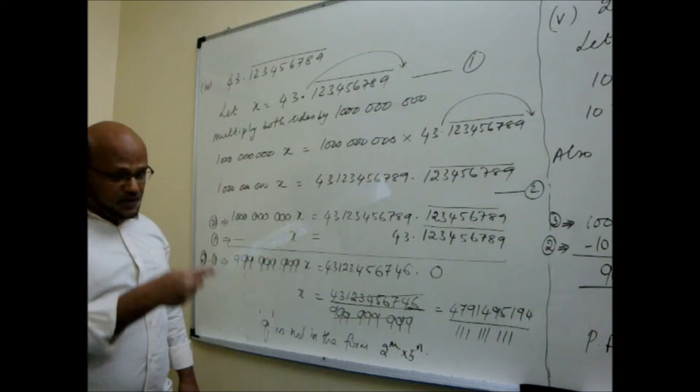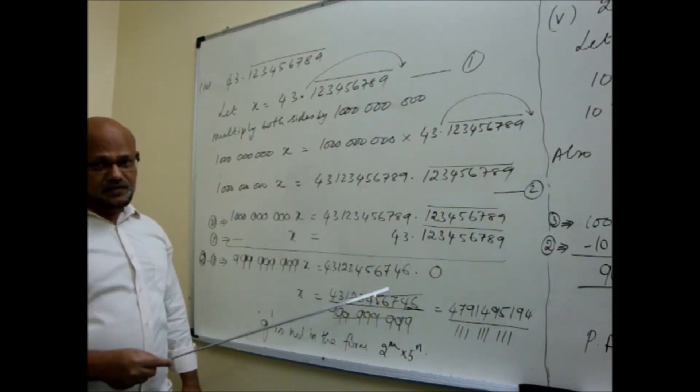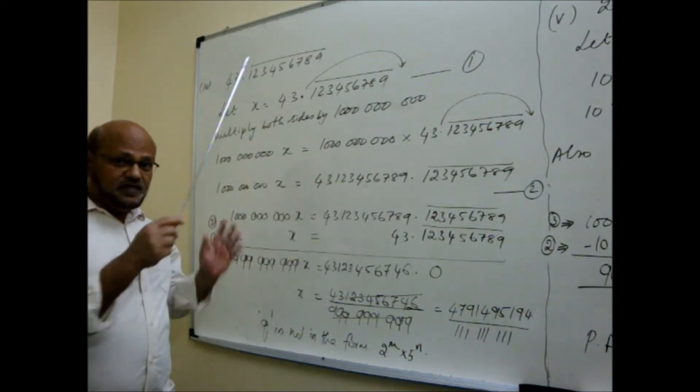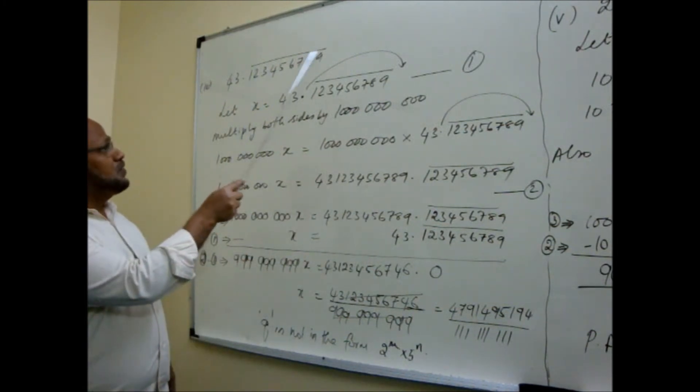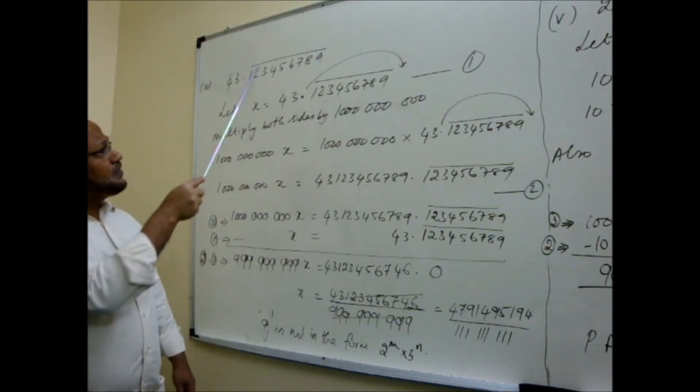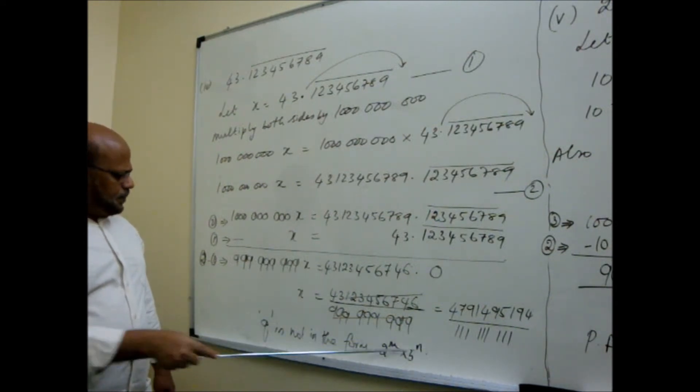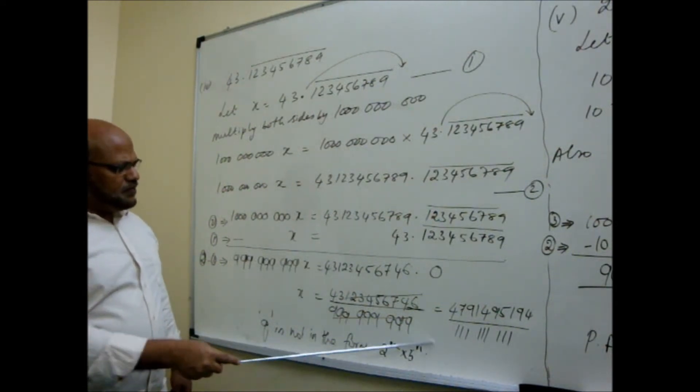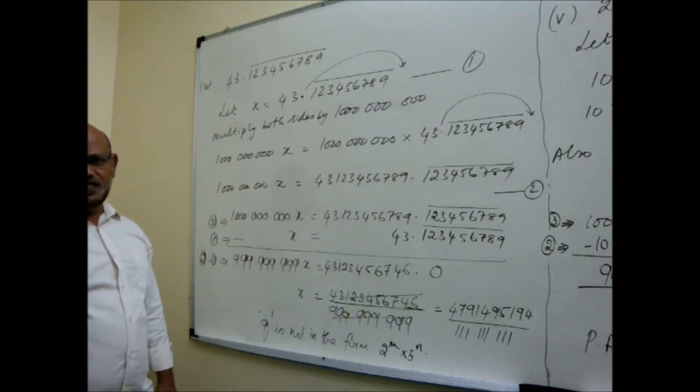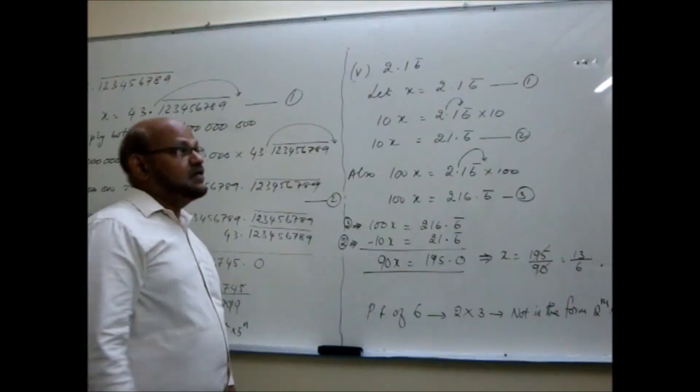So now check this denominator. It is not at all having 2 as a factor or 5 as a factor. Never. So what happens? So the denominator Q is not in the form 2 to the power m, 5 to the power n. So we are confirming that the denominator Q will not be in this form. As the decimal is non-terminating repeating, the denominator Q will not be in this form. If it is in this form, it will have a terminating decimal.